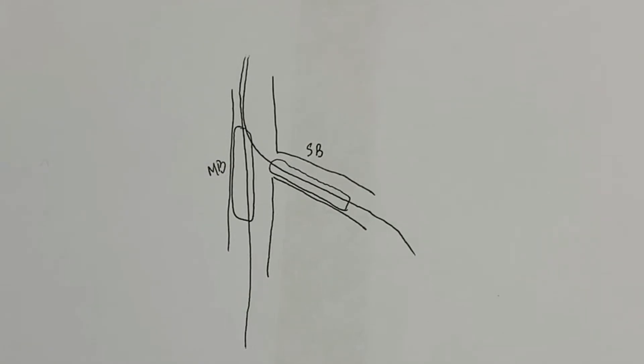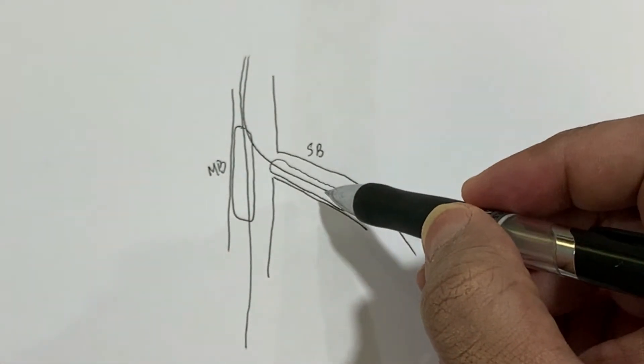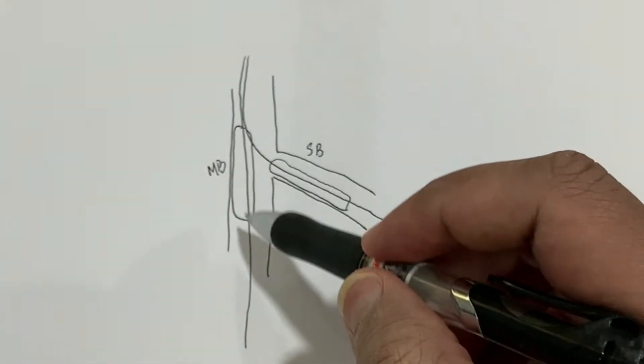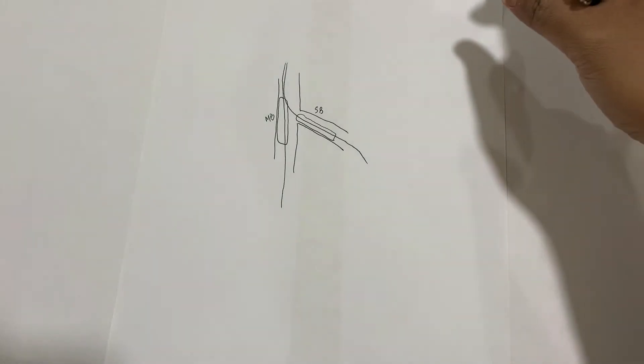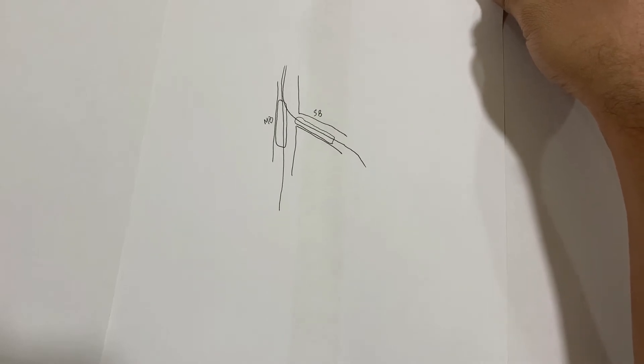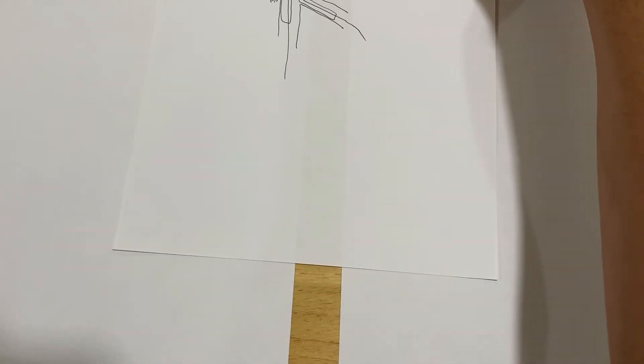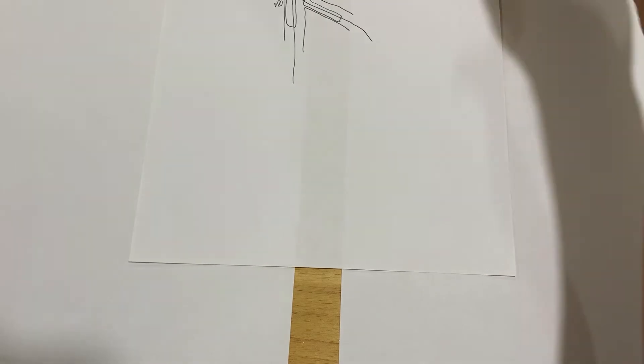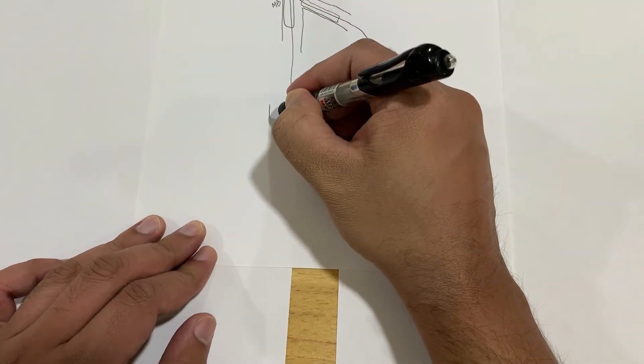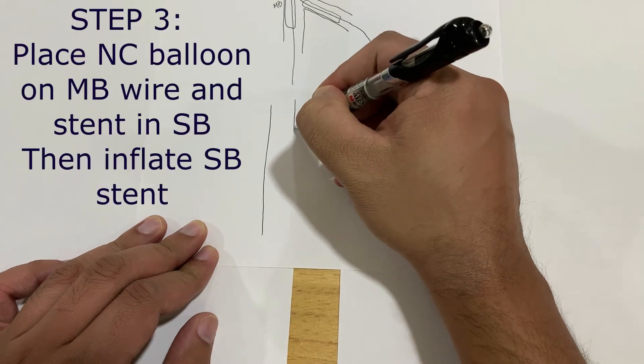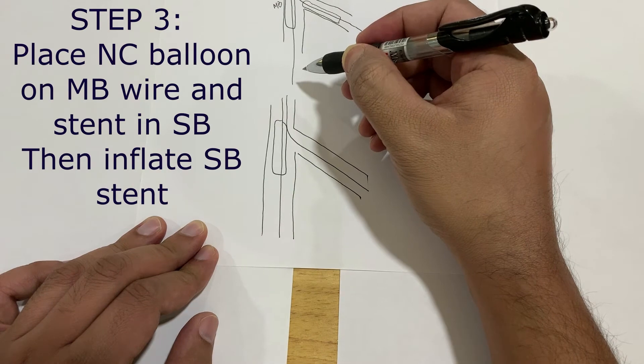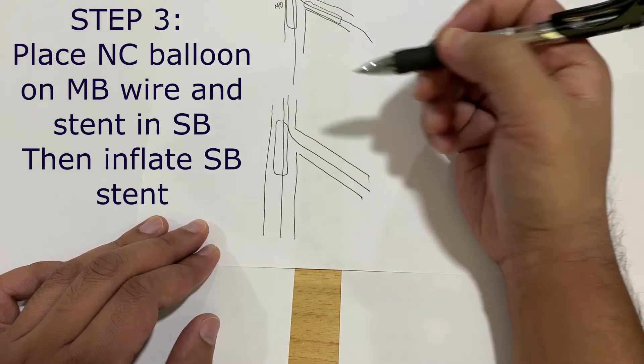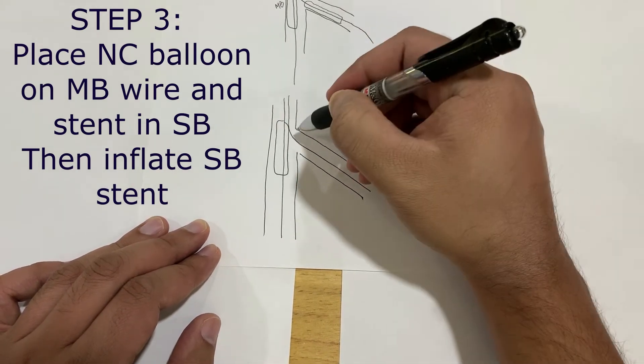Pre-dilatation is extremely important. Pre-dilate first the side branch and then do the kissing balloon. After this step, remove the side branch balloon. Once the balloon is removed, you can bring a stent on this wire.